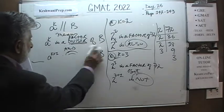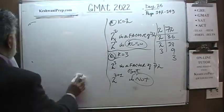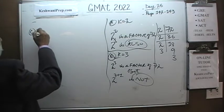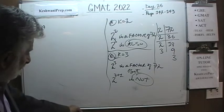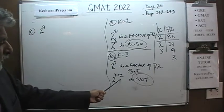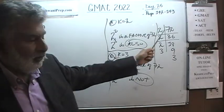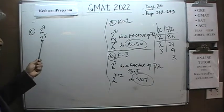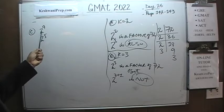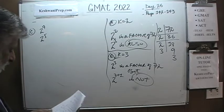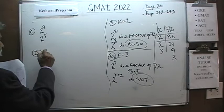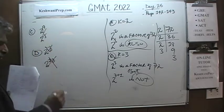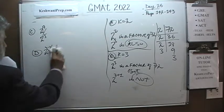Now let me quickly show you why C, D, and E do not work. In C we have k=4, so 2 raised to 4. We have already established that 2 raised to 4 is not a factor of 72. And neither is 2 raised to 8, nor 2 raised to 18. They are all wrong. The answer is B.